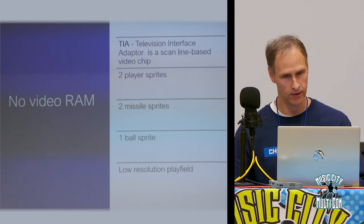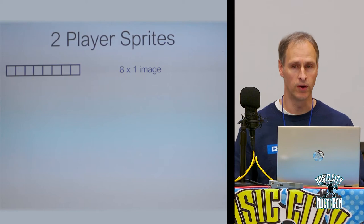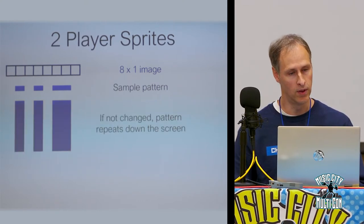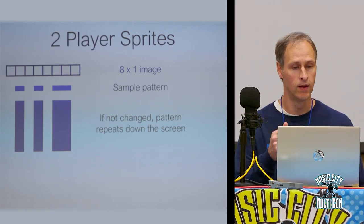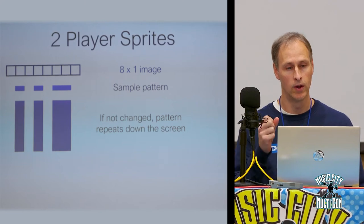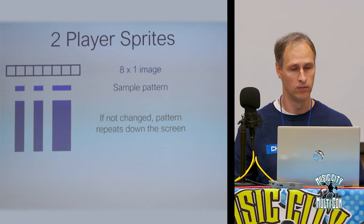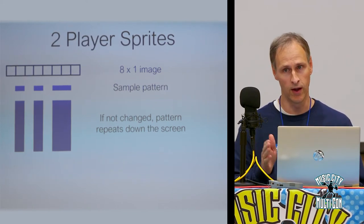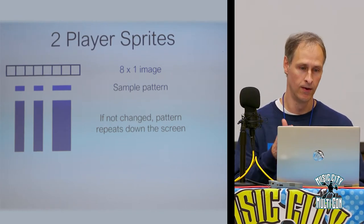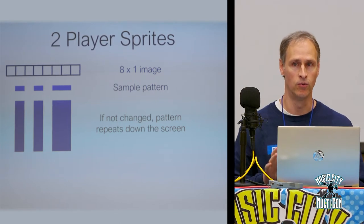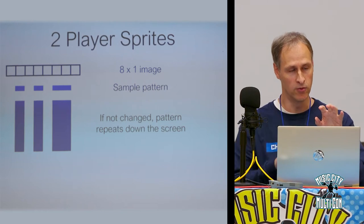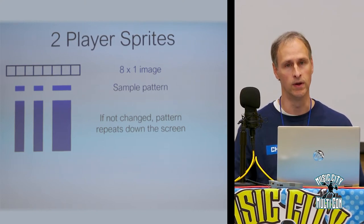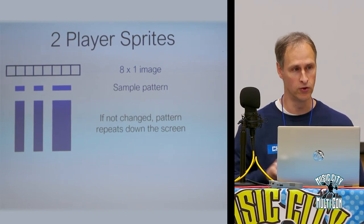The two player sprites are 8×1, and if you don't change the pattern you just repeat it — so if I set the register and color to blue, that pattern repeats all the way down the screen. The magic comes from changing the pattern every line, changing the color, changing the X position, and the number of copies every line. That's how you make it seem like there are more than two sprites — it's the same register being repositioned as you move down the screen.